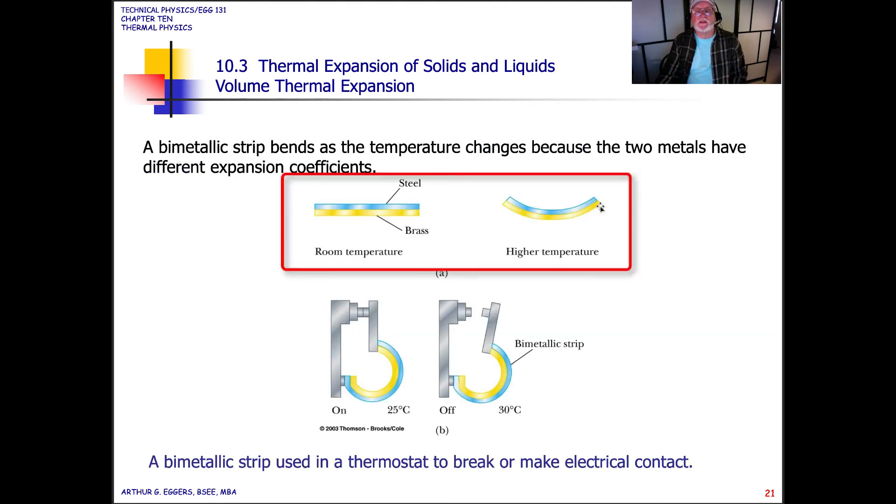If we look at some examples here, a bimetallic strip that bends as the temperature changes because the two metals are dissimilar and have different expansion coefficients. You can see at room temperature, both of them lay fairly flat. But at a higher temperature, one will start to bend the other. They actually will both start to bend, but one will outpace the other.